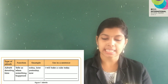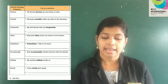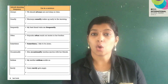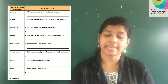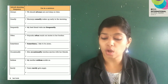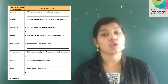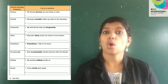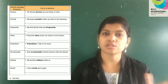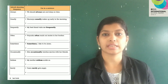Take page number 26. Here, some more adverbs are given. First one is always — always means every time. Example: We should always eat and sleep on time. Then, usually — usually means most of the time. Example: Sharanya usually wakes up early in the morning.